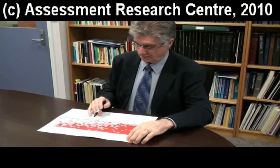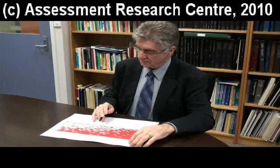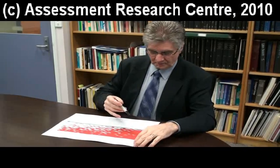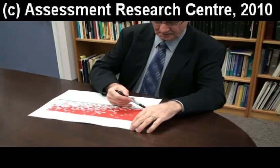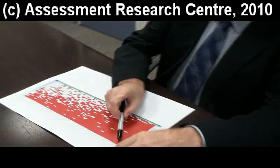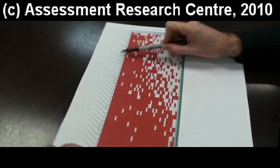We're looking at a Guttman chart and this is one that's already been sorted. We've got the student identification down at the left hand side and we've got the skills embedded in each item across the top.